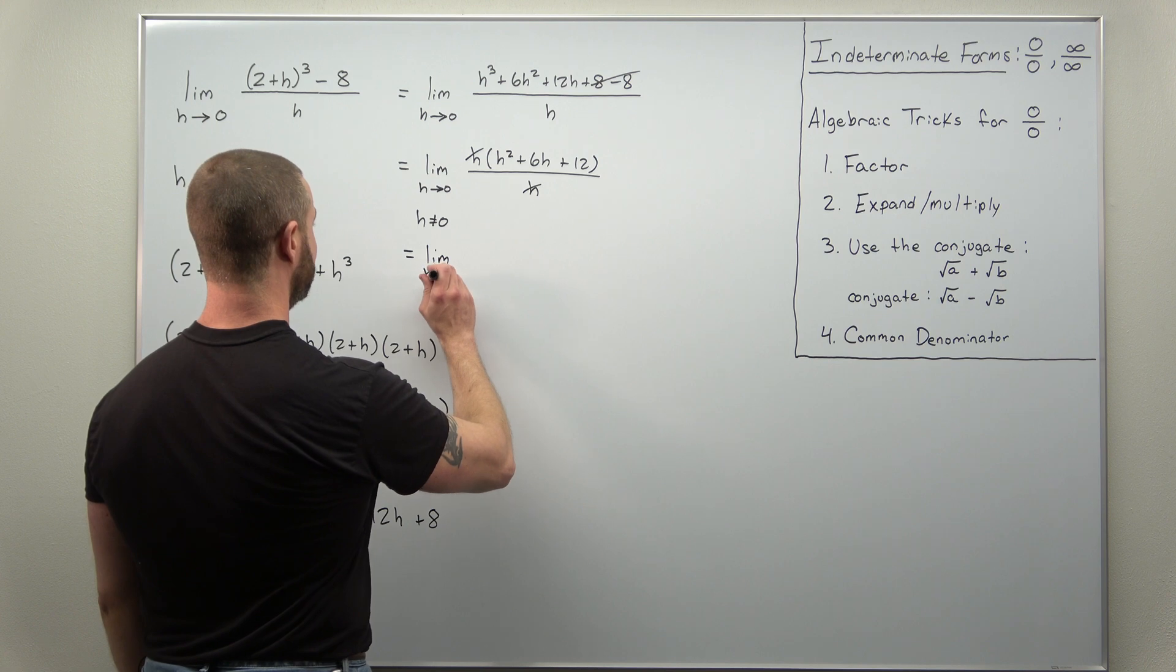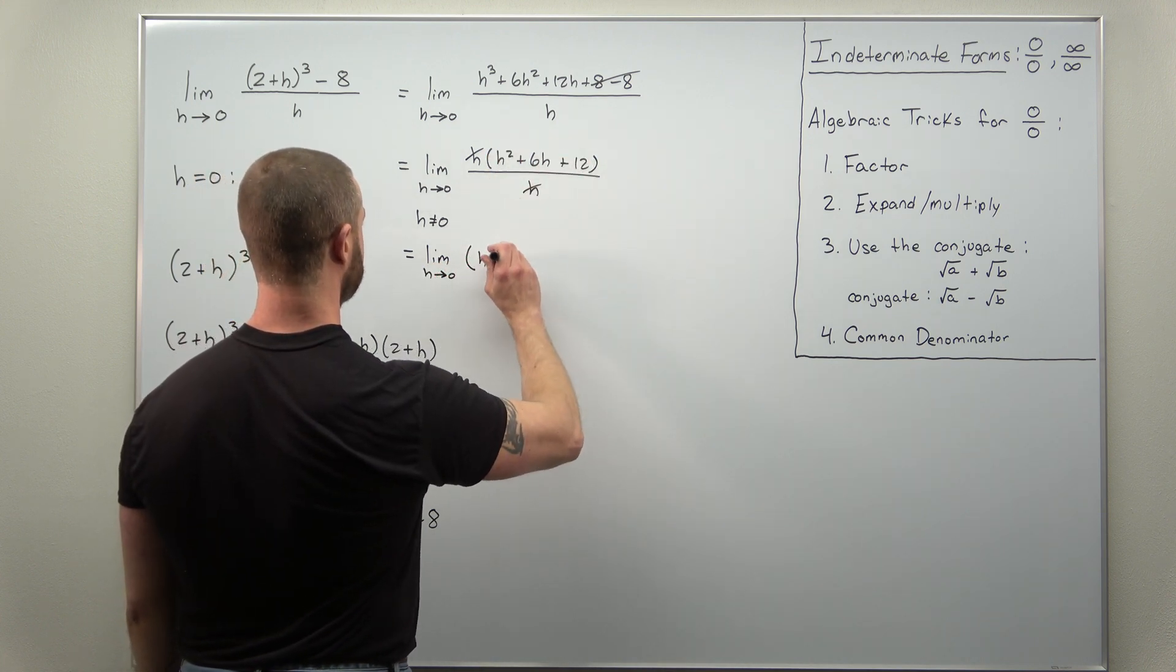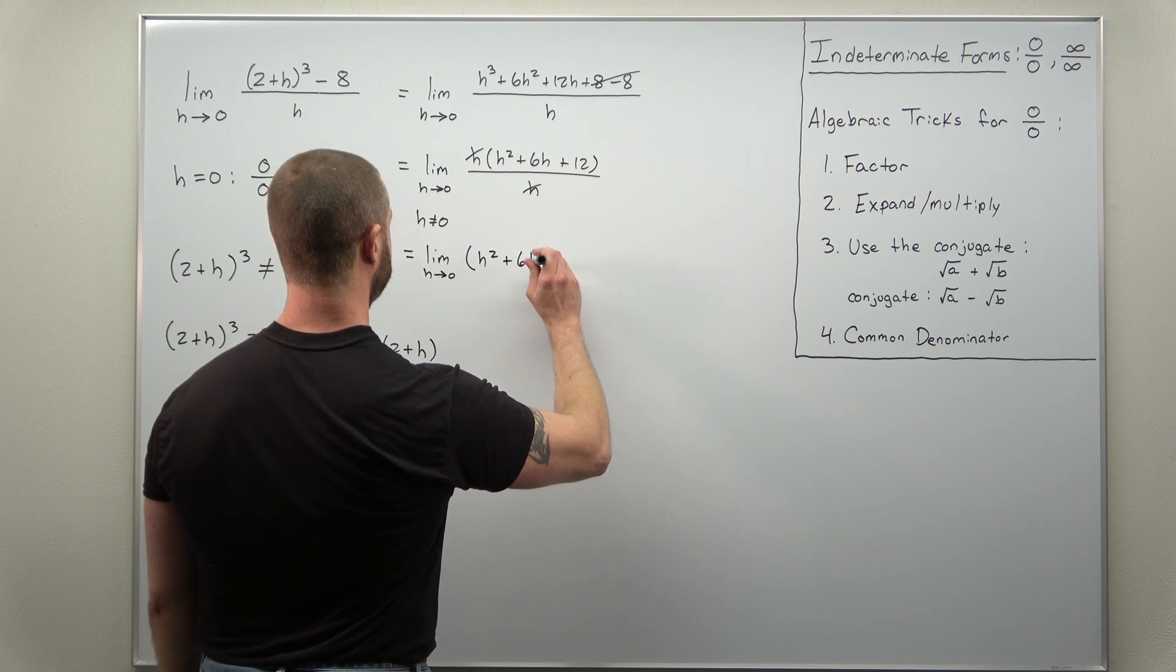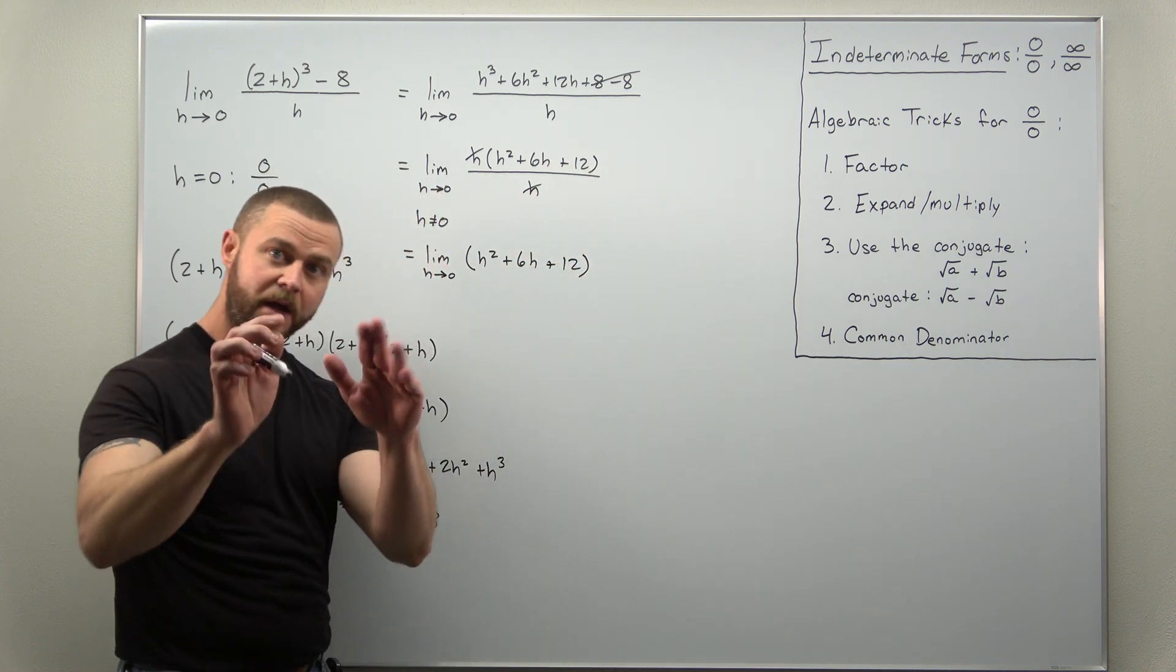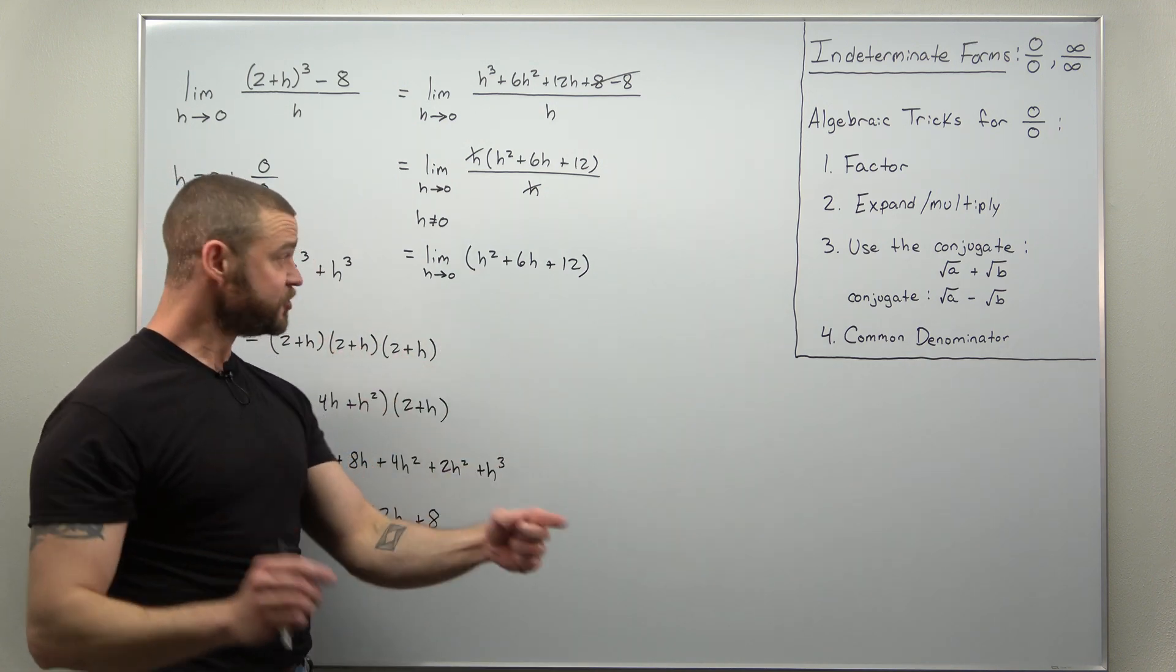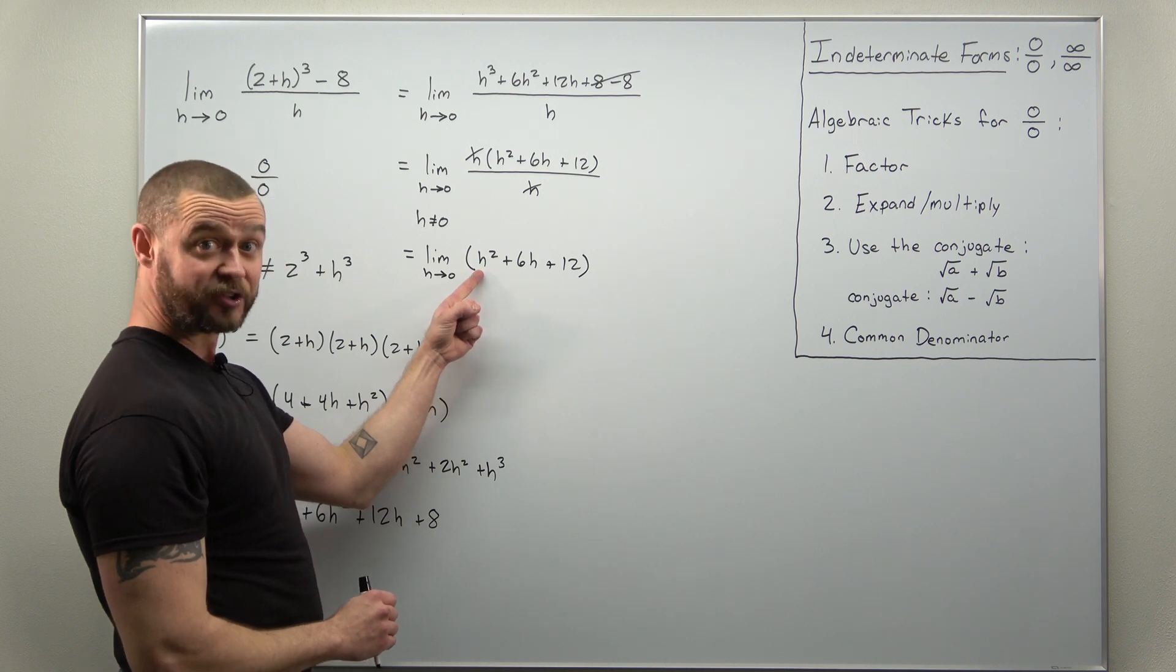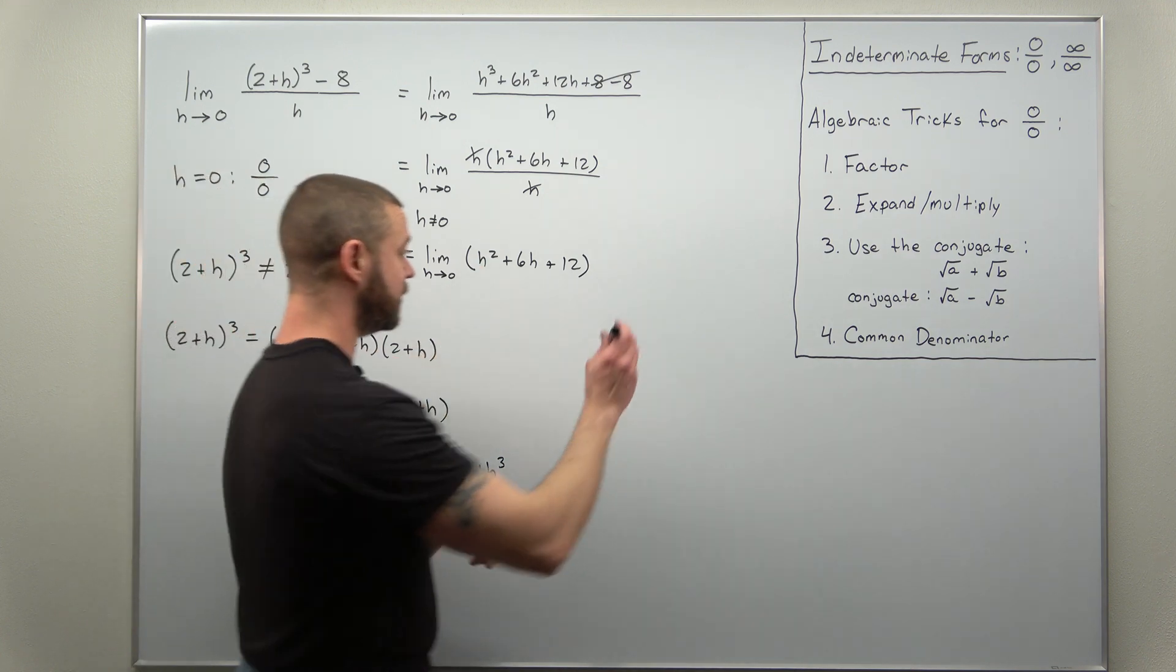We're left with the limit as h approaches zero of h² + 6h + 12. And at this point there is no indeterminate form, so we can just plug in h as zero. Notice that term zero, that's going to be zero, and you'll just be left with 12.